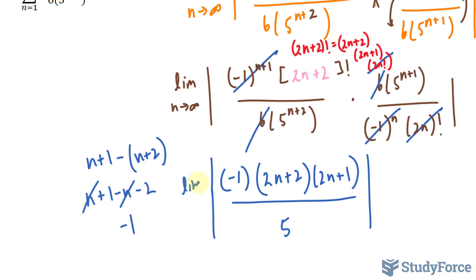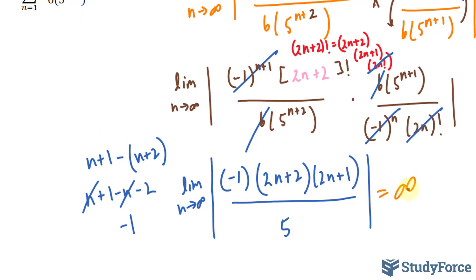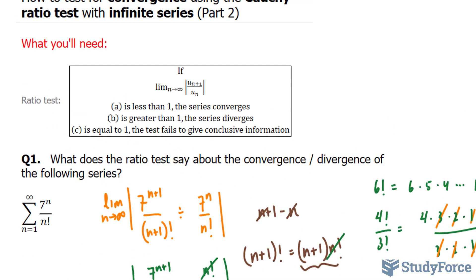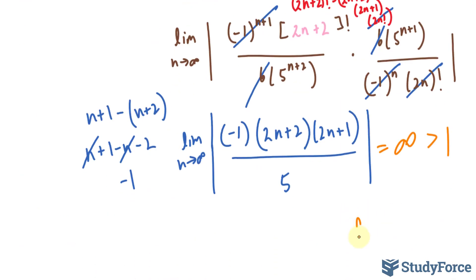Now we have to take the limit as n approaches infinity. If I substitute a very large number to here and here, we won't be able to get a limit for this expression. This tells us that because our limit is infinity, this obviously is bigger than 1, and according to the test, if it's greater than 1, the series diverges. So I'll write down div.